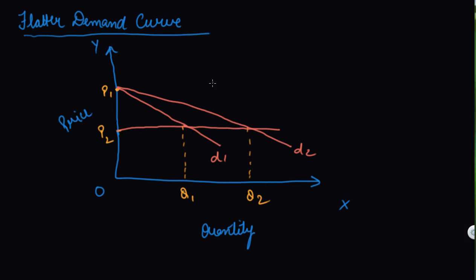Now let's understand the flat demand curve. A price was P1. The price has now reduced to P2. So we have got one quantity Q1 and the second quantity Q2. We have drawn two demand curves — D1 and D2. At price P, this was our initial quantity Q. It has reduced to price P2. The quantity in demand curve D1 has gone from Q to Q1. In D2, it has gone from Q to Q2. So flatter the demand curve, greater is the elasticity.